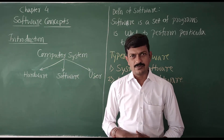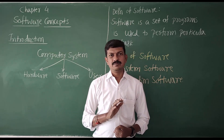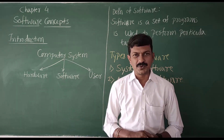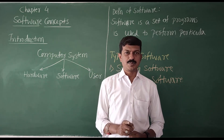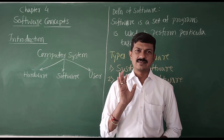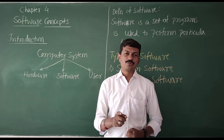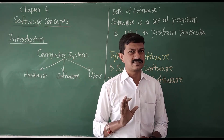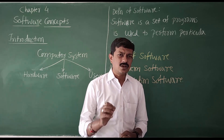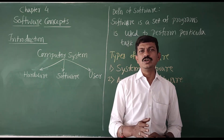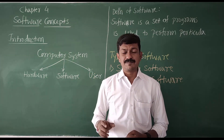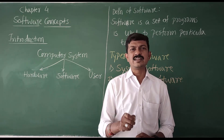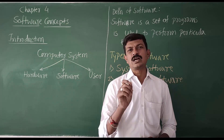What do you mean by software? Software is a set of programs which is able to carry out a particular task. That is a simple definition of software — software is a set of programs which is able to carry out a particular task.